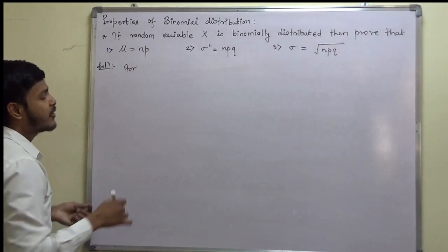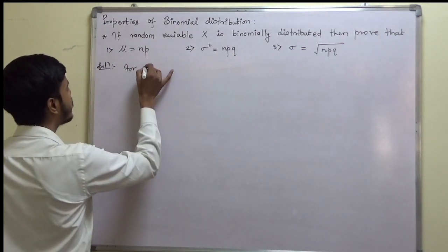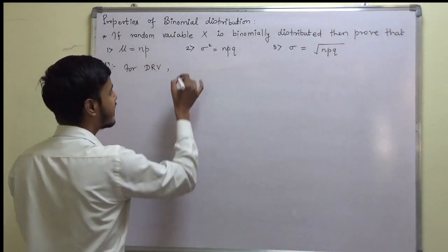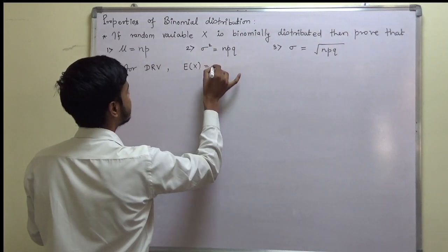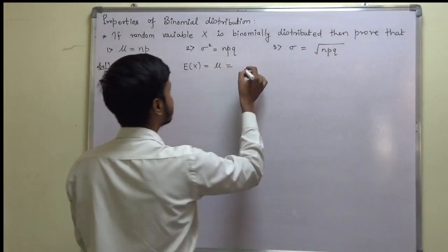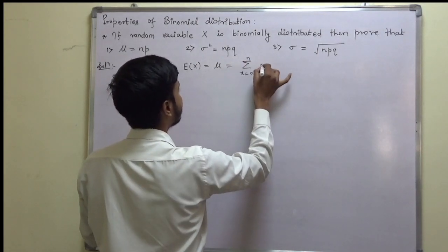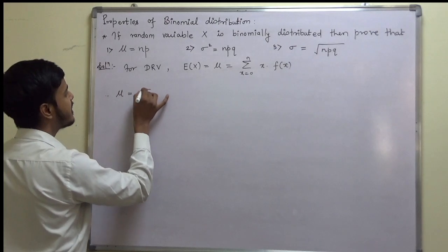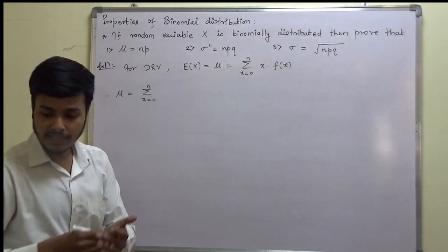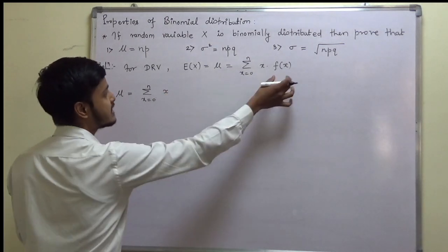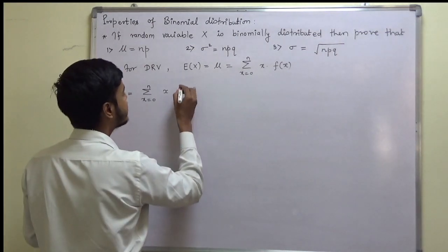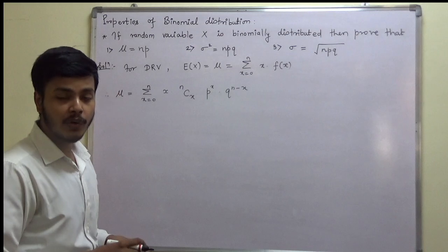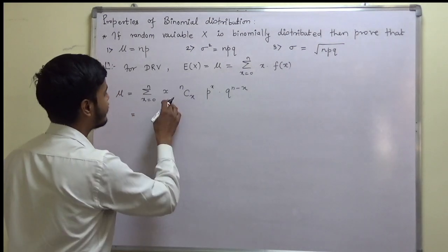As you know, the binomial distribution is for a discrete random variable. For a discrete random variable, mu is the mean or expected value. So the expectation of x, which is mu, is equal to the summation from x=0 to n of x·f(x). So mu equals summation from x=0 to n of x times f(x), and the probability distribution f(x) for binomial is nCx · p^x · q^(n-x).